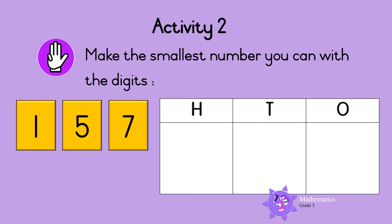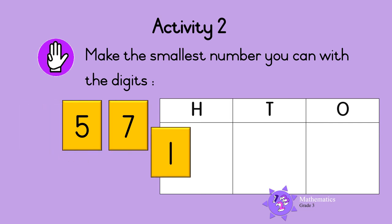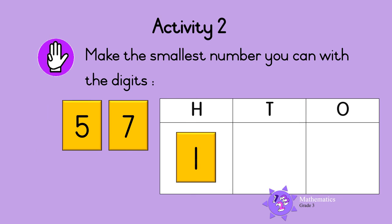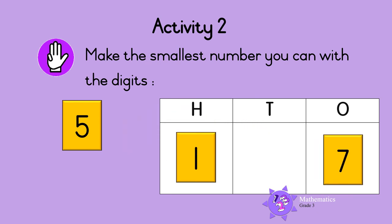Activity two: make the smallest number you can with the digits. To make the smallest number, write the digit with the lowest value in the hundreds column. One is the digit with the lowest value, so one goes in the hundreds column. Then write the digit with the highest value in the ones column. Seven is the highest value, so seven goes in the ones column.